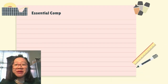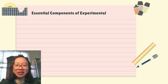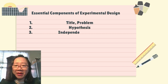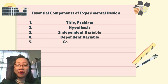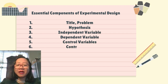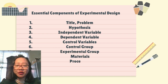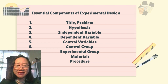In doing an experimental design, these are the essential components that you need to integrate: the title, the problem, hypothesis, independent variable, dependent variable, the control variables, control group, experimental group, materials, and procedure.